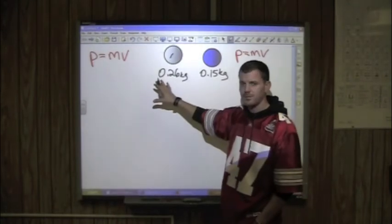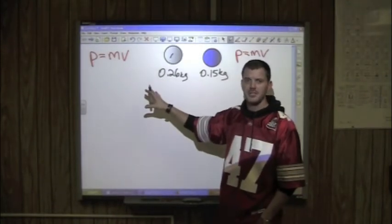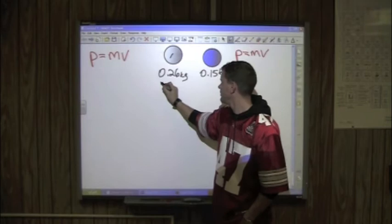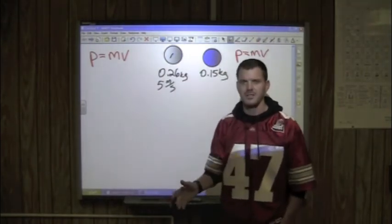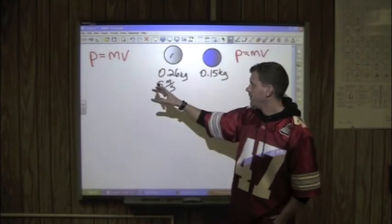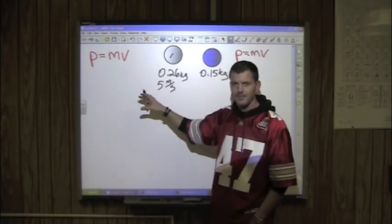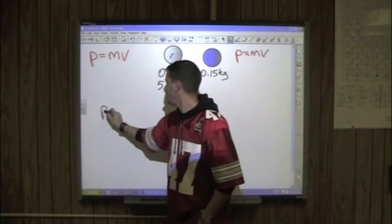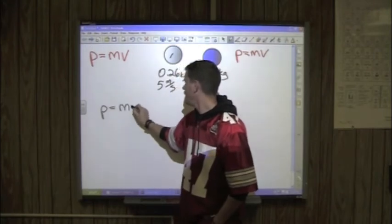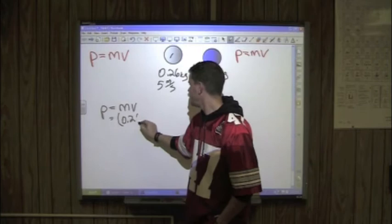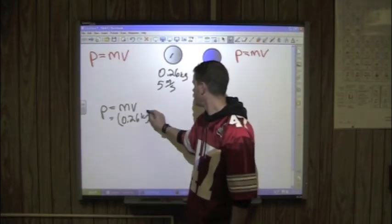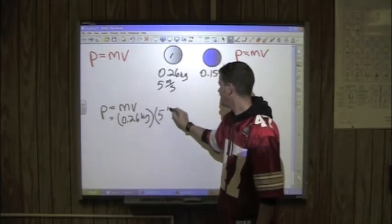Now we know the most about the first ball. We are going to say it is going 5 meters per second, which is a little over 11 miles an hour. And we are going to find its momentum. So we say momentum is equal to mass times velocity which is equal to 0.26 kilograms times 5 meters per second.